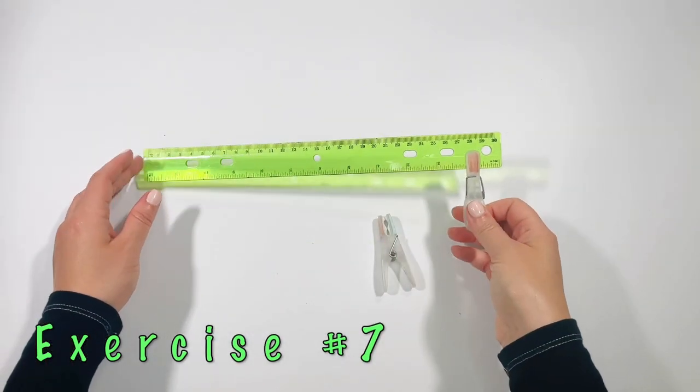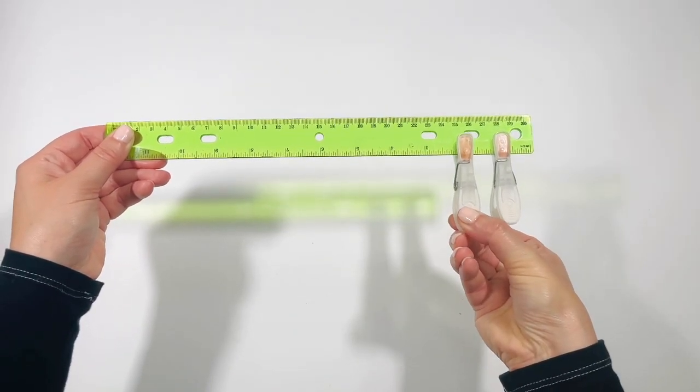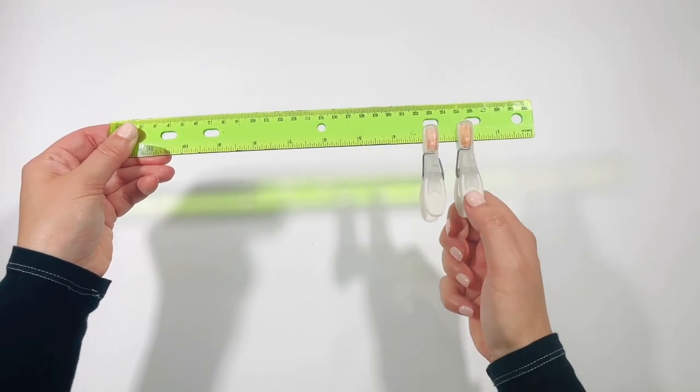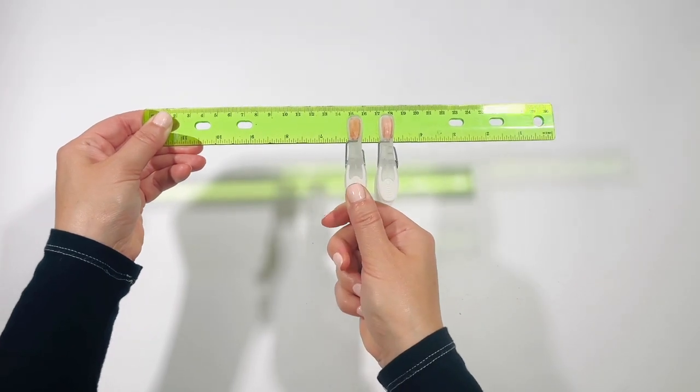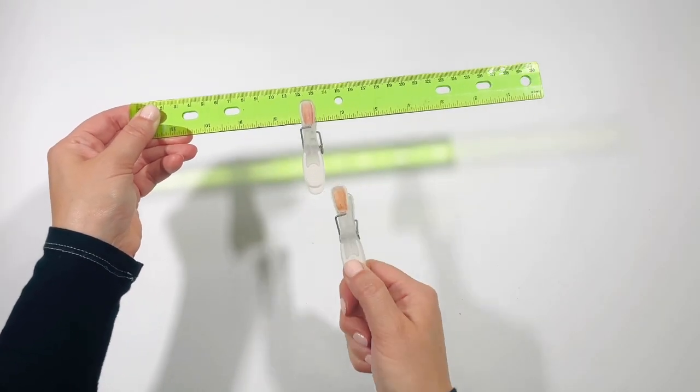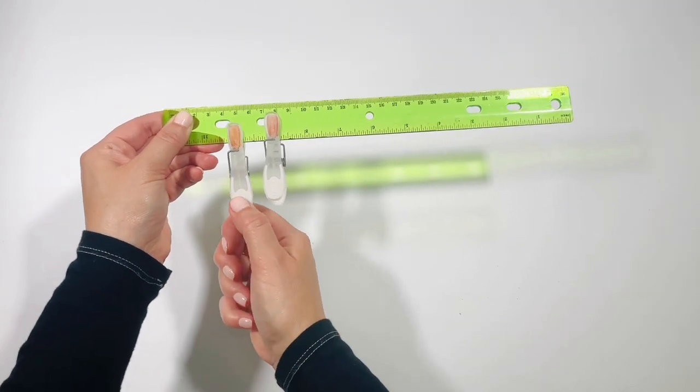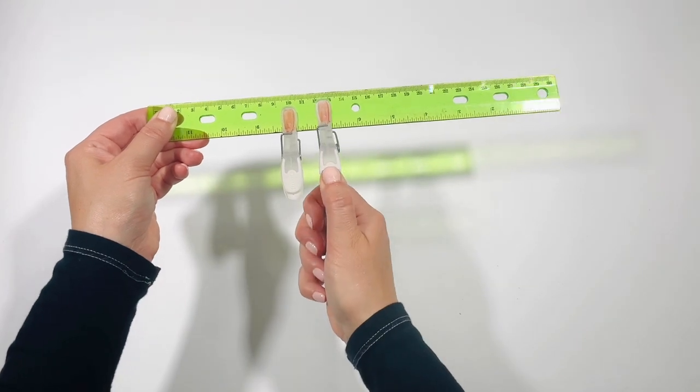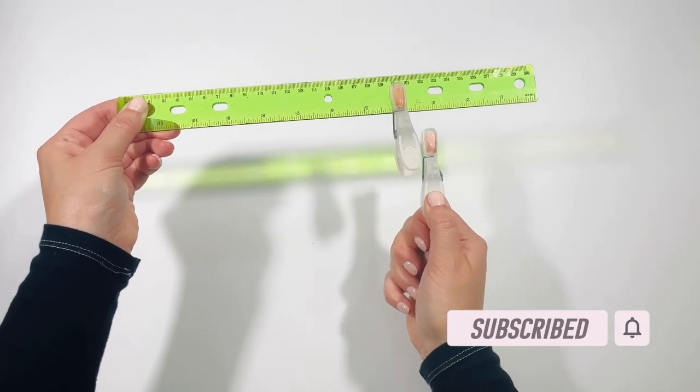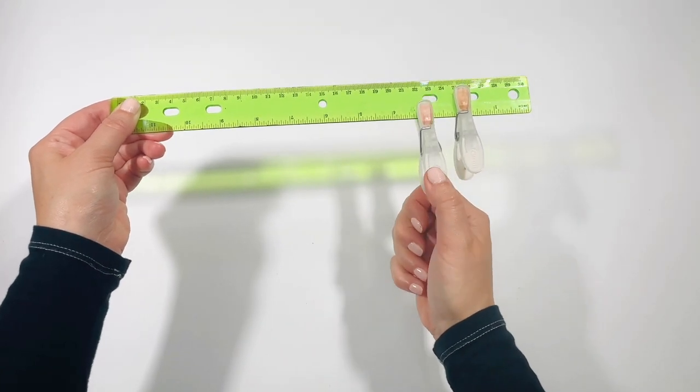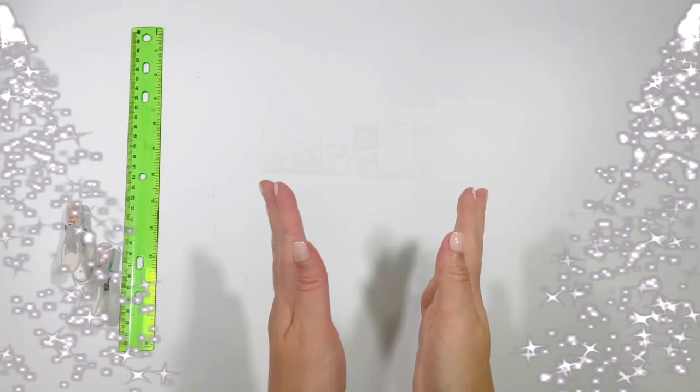Exercise number seven. Use both cloth pins now and count numbers 1 through 12 and then backwards. Pause the video now if you need more time. It's so nice that you've finished your exercises.